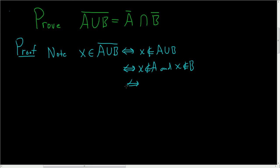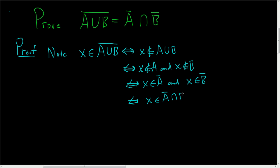And what does this mean? Well, if X is not in A, then X is in the complement of A. And if X is not in B, then X is in the complement of B. So X is in the complement of A and X is in the complement of B. This is the same as saying that X is in the intersection of the complement of A with the complement of B.